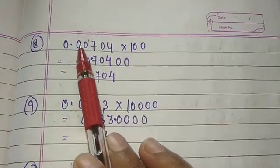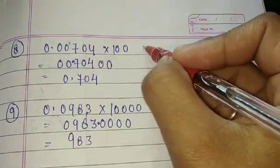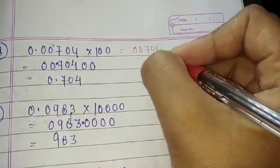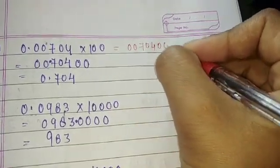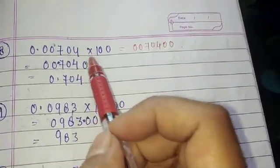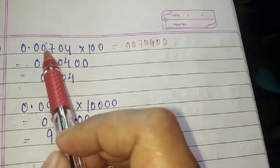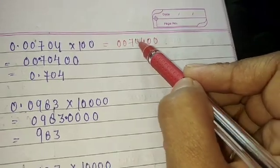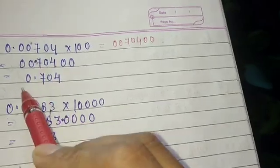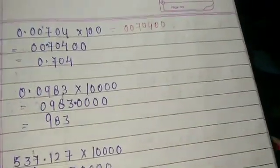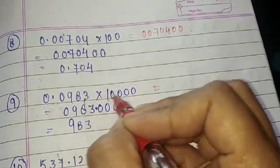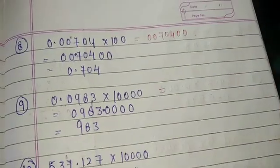Now 0.00704 into 100. First forget the point and write 00704; 100 has two zeros so add two zeros. Count the decimal digits: 1, 2, 3, 4, 5 — five digits. Add a zero as needed. My answer is 0.704.